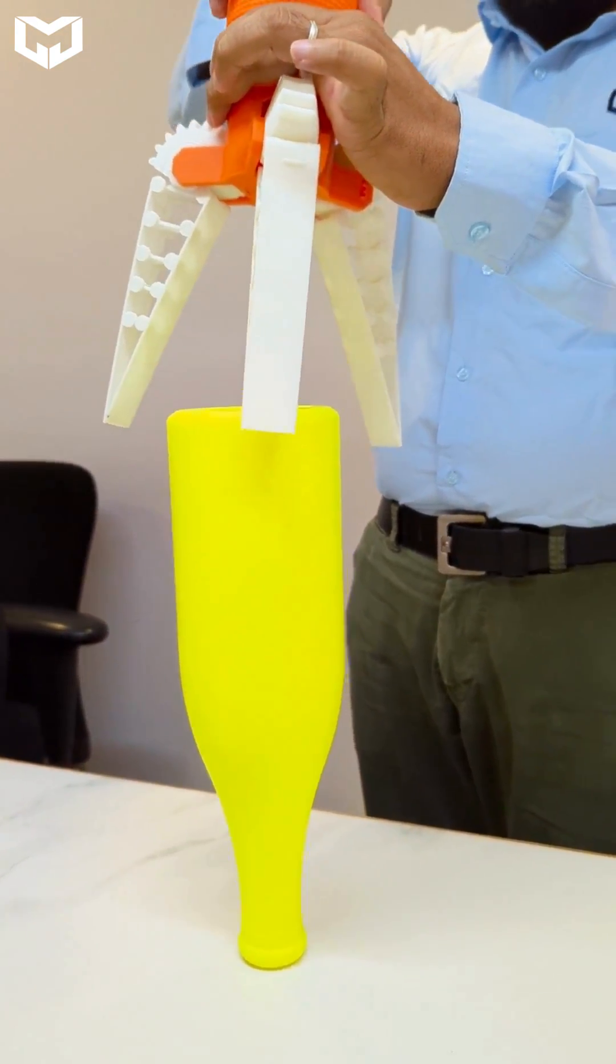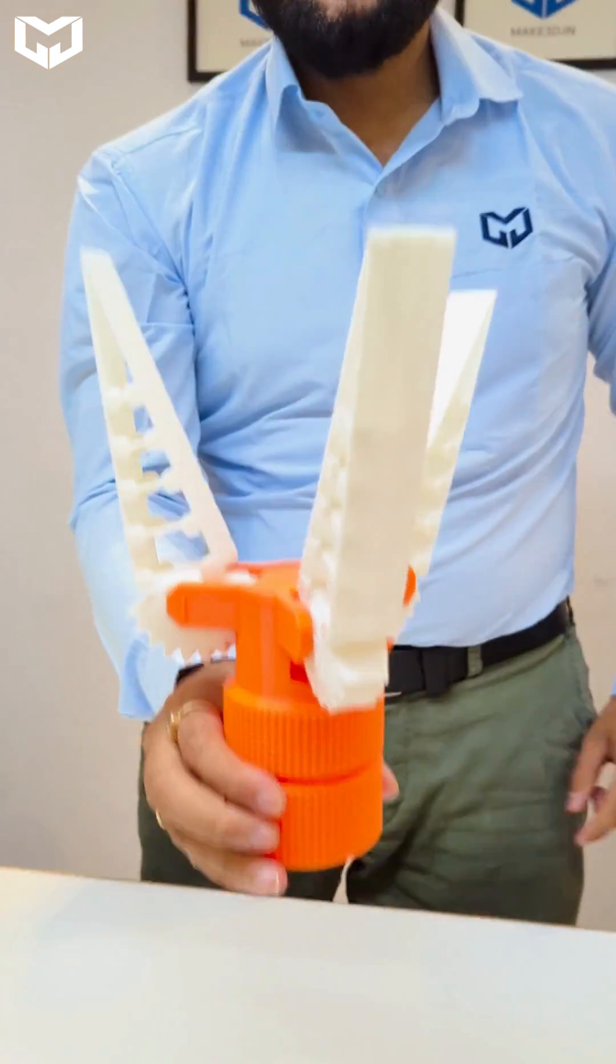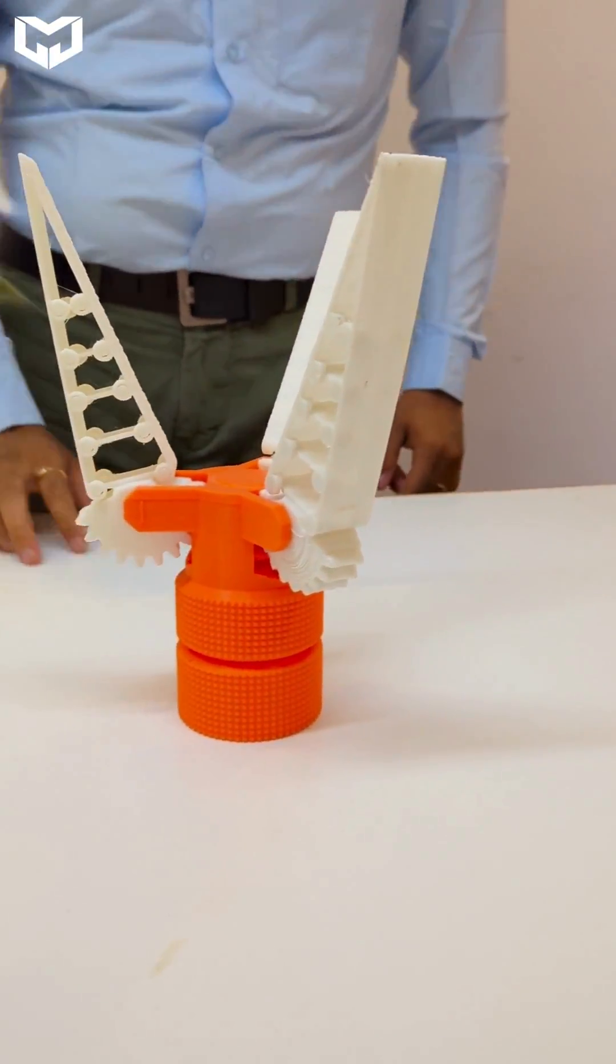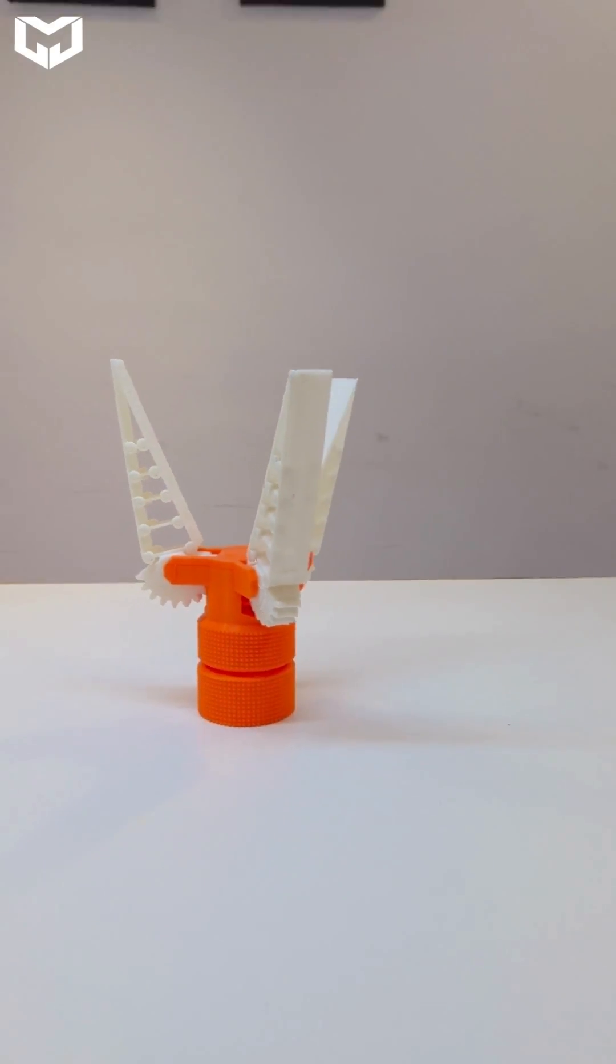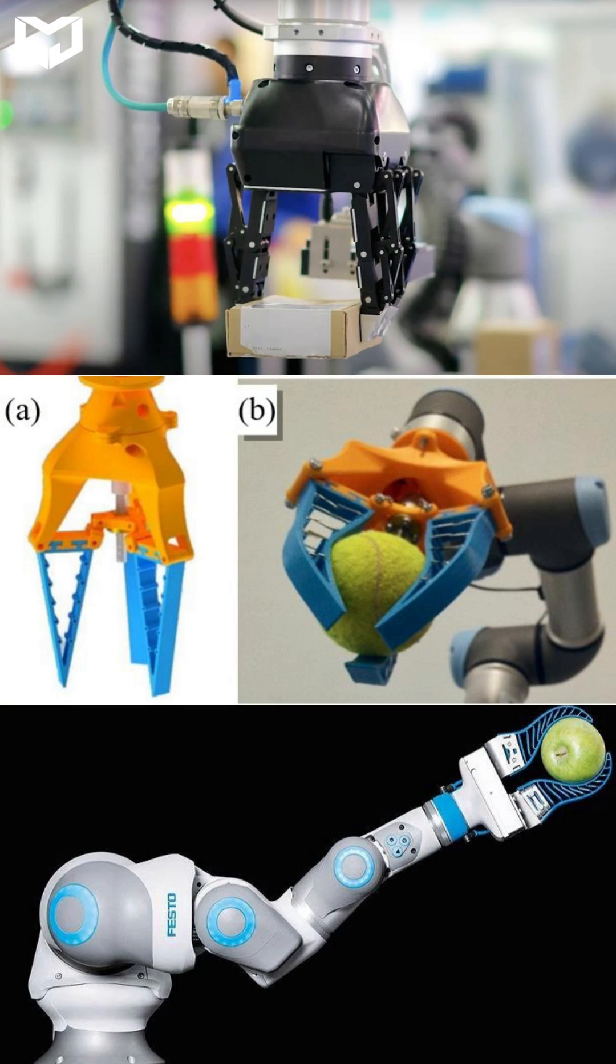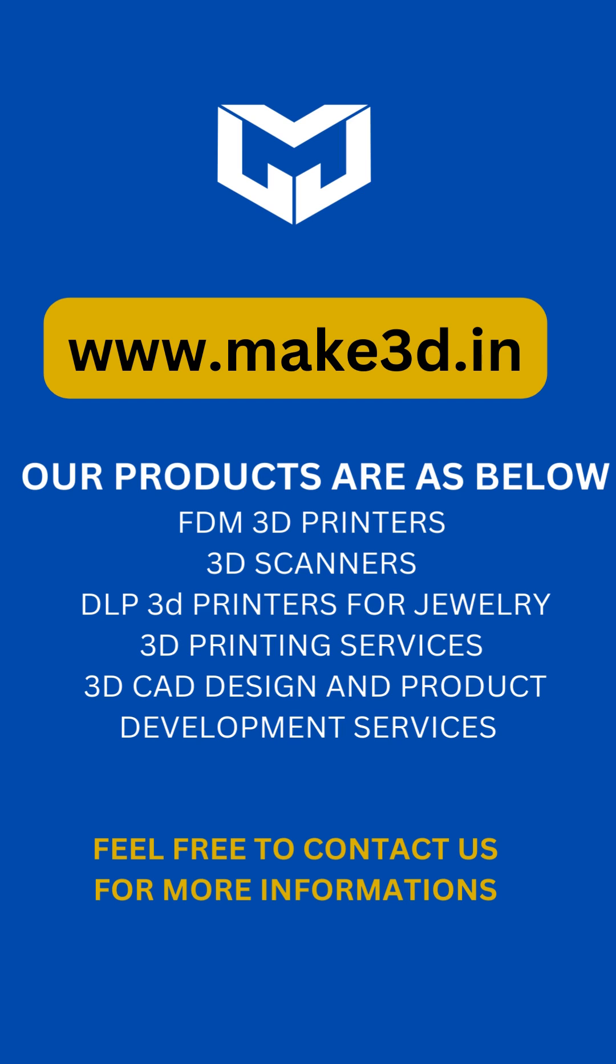The design and demonstration of the 3D printed flexible gripper have shown how useful FDM technology can be for robotics. This project is great for anyone interested in 3D printing and robotic grippers, as it offers a practical and easy to use solution. The gripper's abilities prove its potential for many applications, making it an essential and affordable option for the robotics industry.